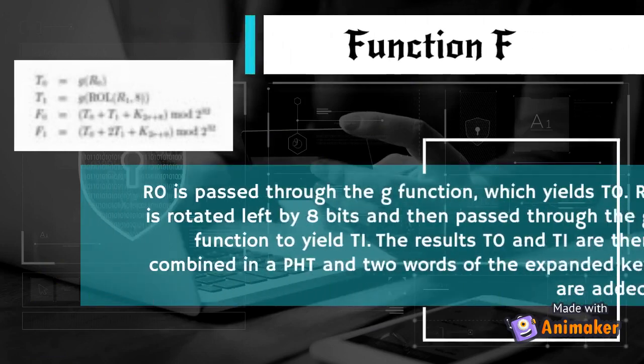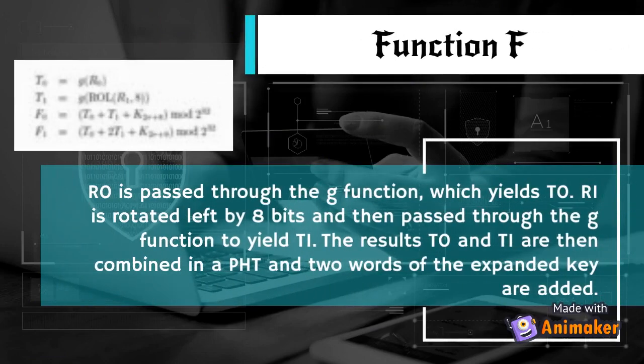The function F is a key-dependent permutation on 64-bit values. Function F has three arguments: two input words R0 and R1, and the round number, which are used to select the appropriate sub-keys. R0 is passed through the G function, which yields T0. R1 is rotated left by 8 bits and then passed through the G function to yield T1. The results T0 and T1 are then combined in a PHT and two words of the expanded key are added.